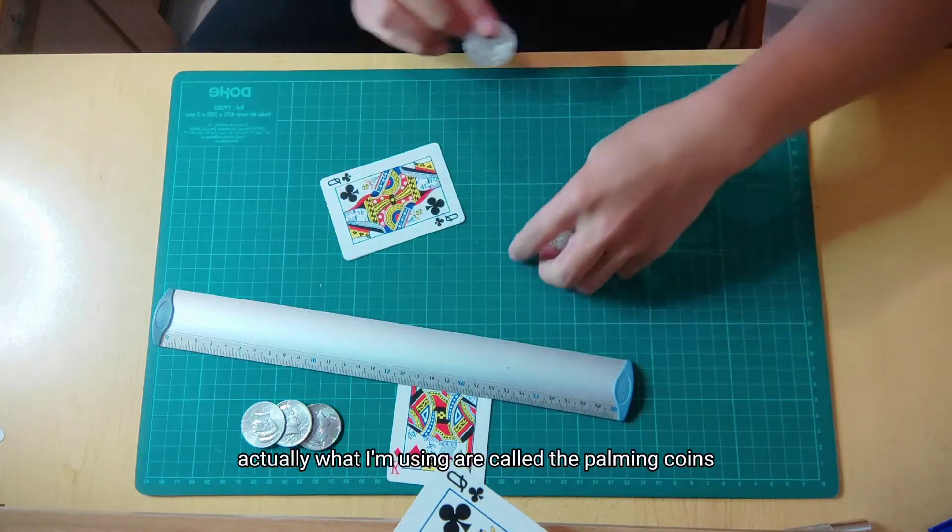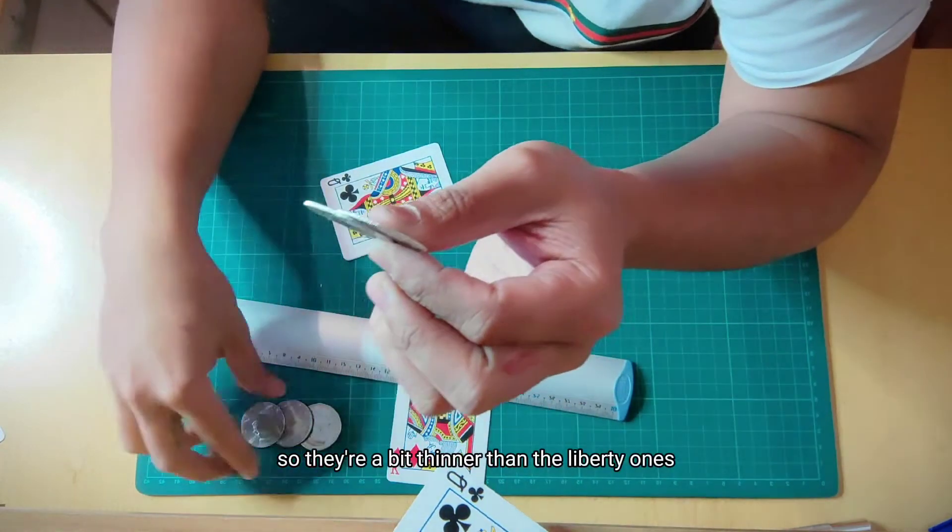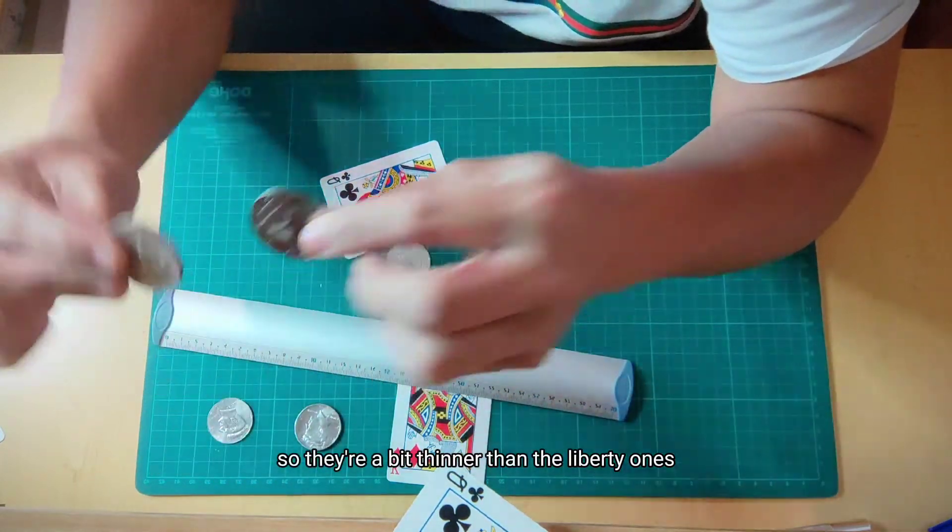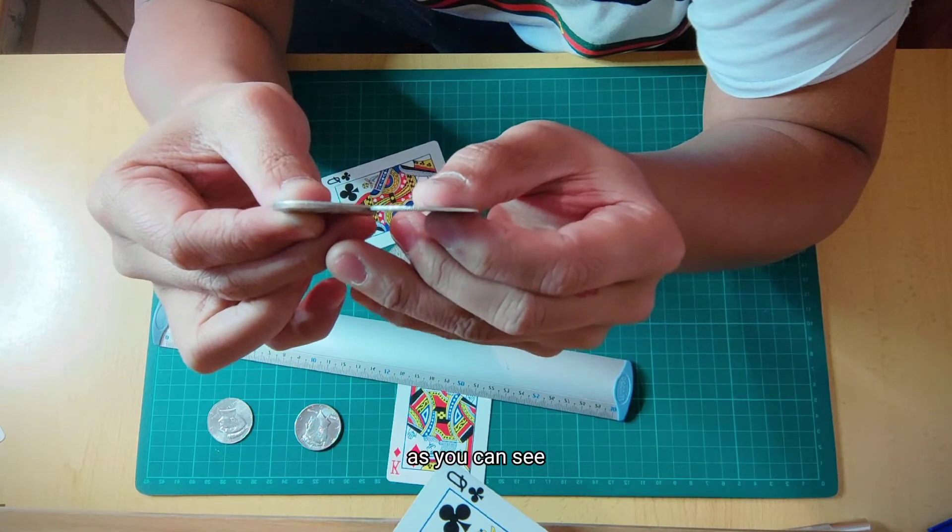Actually, what I'm using are called palming coins. So they're a bit thinner than the Liberty ones, as you can see.